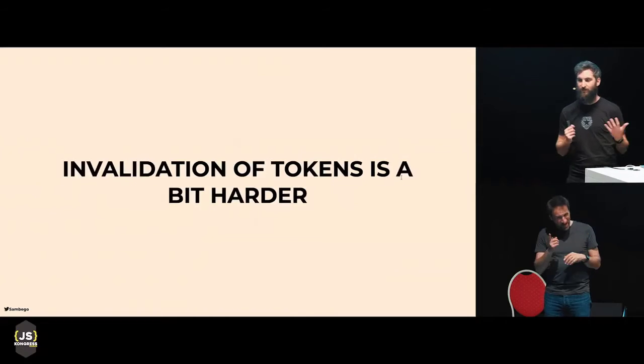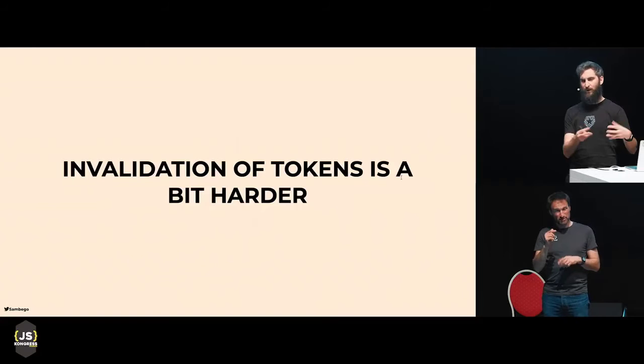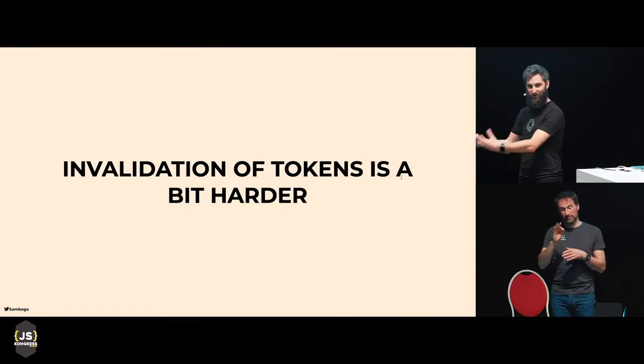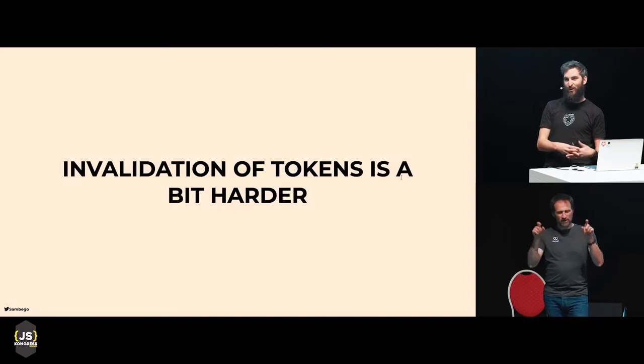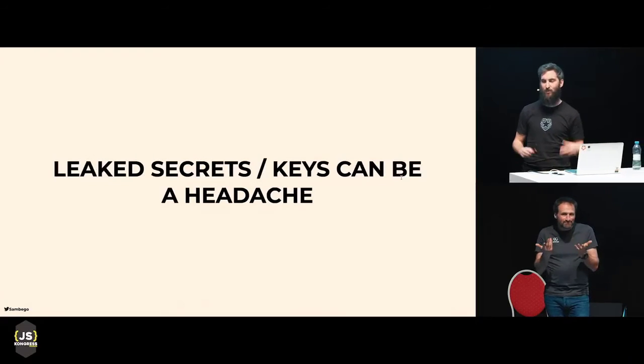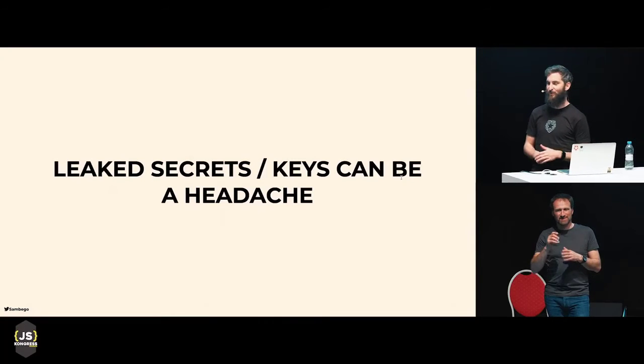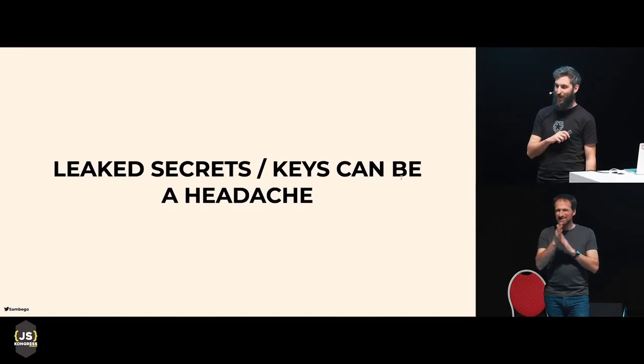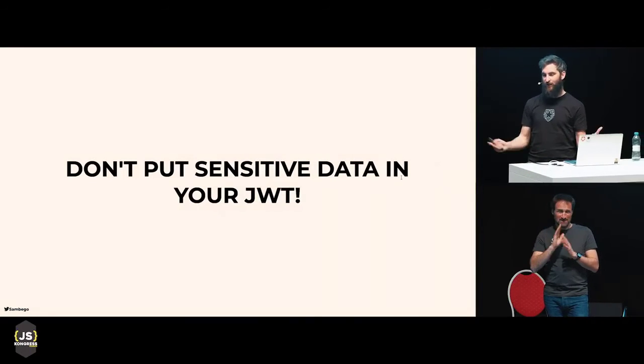So are there any downsides to JSON Web Tokens? Invalidation of tokens is a bit harder. Imagine you start working for a company today, but they fire you on the spot — you're still logged in and your JSON Web Token might be valid for a week. To invalidate that token, you have to start creating some kind of blacklist. And if you leak your secret or key, people can forge your JSON Web Tokens. So never ever leak your secrets and keys. Also, don't put sensitive data in your JSON Web Token, because the payload and header are just Base64 encoded JSON objects — anybody can decode those parts. Only put data in there that's not sensitive.